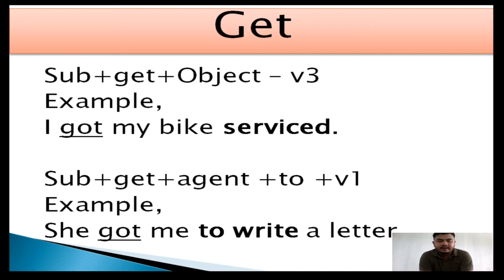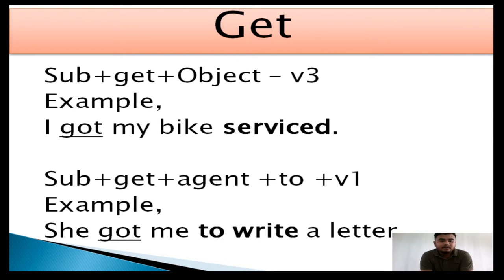The first causative verb is 'get.' The rule is: Subject + get + object = verb 3. That means when the causative verb comes in the sentence with an object, the verb must be verb 3. Example: 'I got my bike serviced.' In this sentence, 'got' is the causative verb — don't be confused, 'got' is the past form of 'get,' so it is also one of the causative verbs.